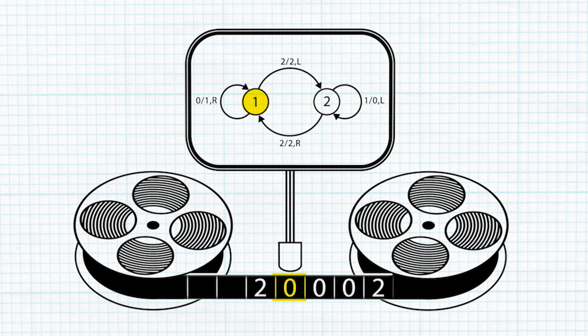So we're in state one; there are two different arrows going away from it, each one labeled. This one says: if the playhead reads a zero, then change the value to one. Done. Next, the instruction says to move the playhead one step to the right — that's the letter R.